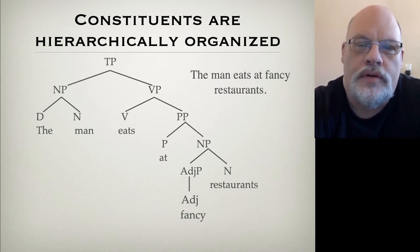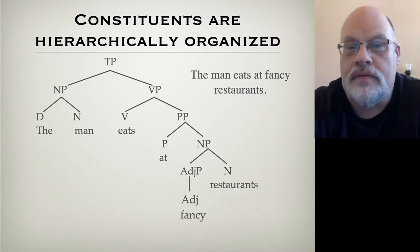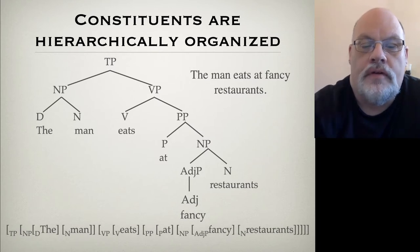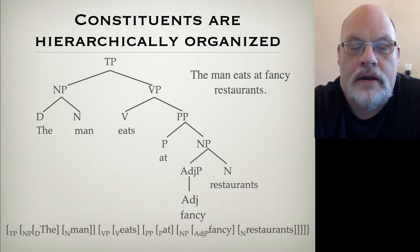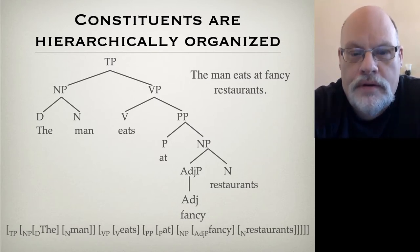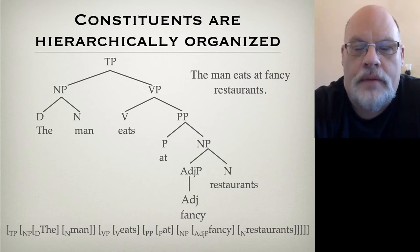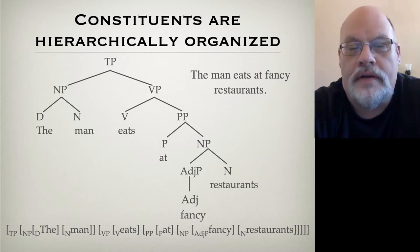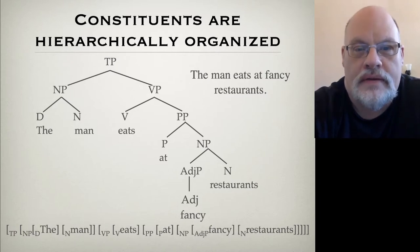You can see this more directly in the other notation we use for representing syntactic structure: the bracketed diagram. If you look at this bracketed diagram, although it is very hard to read, you will see, for example, that the noun restaurants is embedded inside of a much greater set of constituents, like the prepositional phrase, the verb phrase, and the TP itself.